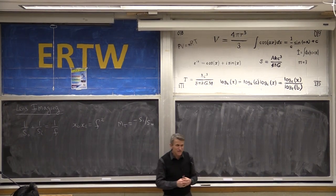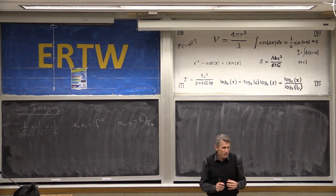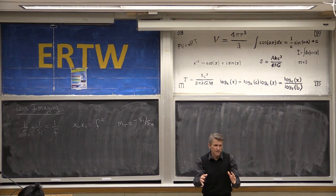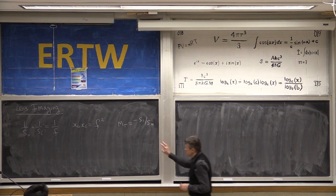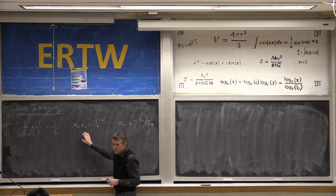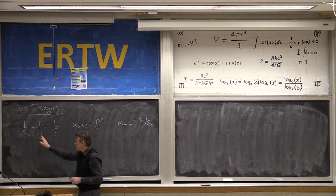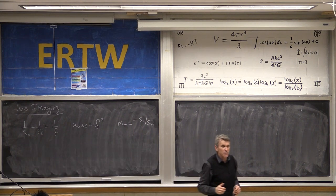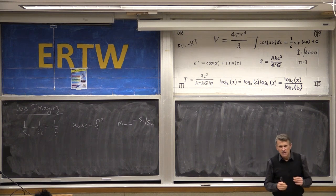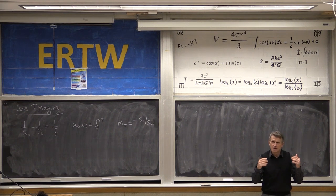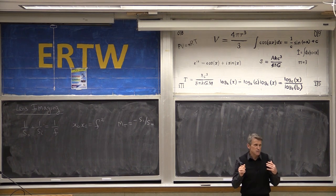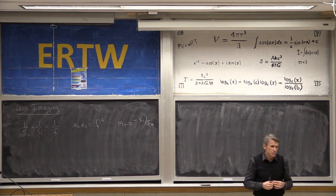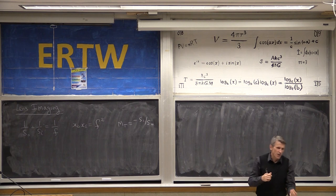Happy Friday evening. We're going to learn about the eye eventually, but first we'll finish the section on lensmakers equations — magnification, the Newtonian equation, and the standard object-image relationship with focal length. Then we'll apply these ideas to the eye, eye correction, and start talking about the eyepiece lens. Next week we move to optical instruments which improve our vision to see far or small.